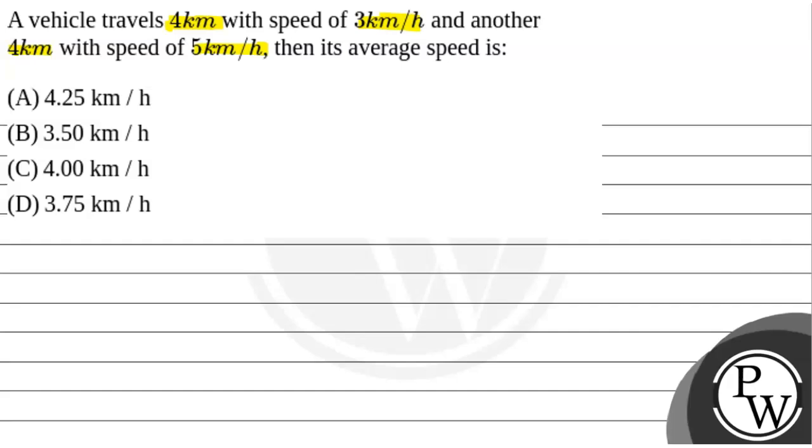So the question is: in a vehicle, the first 4 km is traveled at 3 km per hour velocity, and the next 4 km is at 5 km per hour velocity. We have to find the average speed.